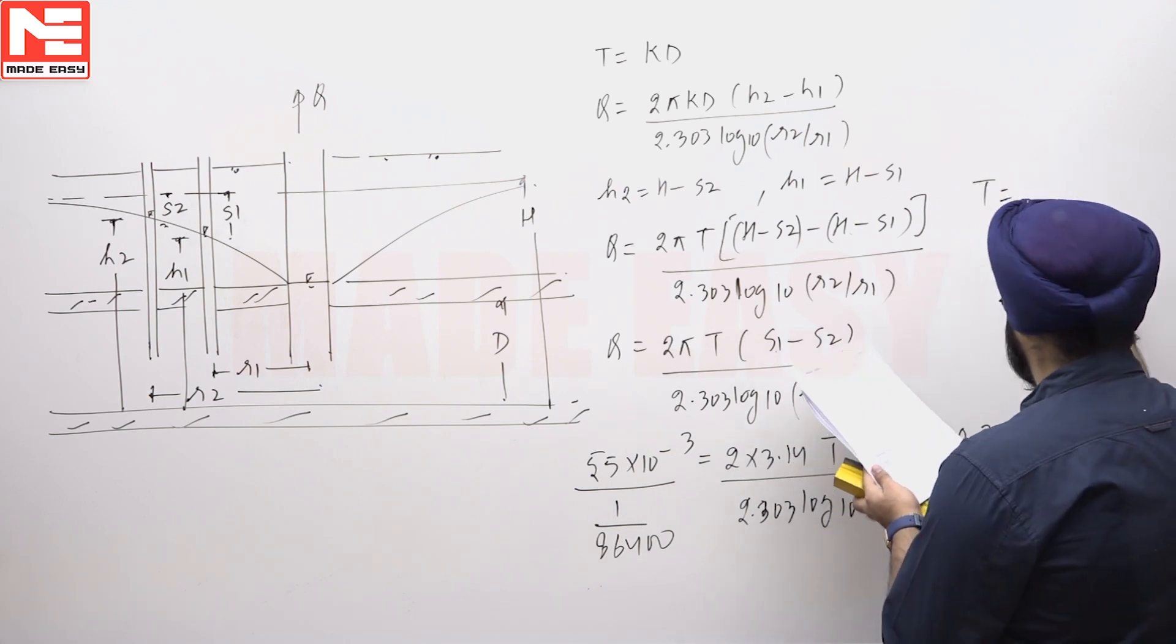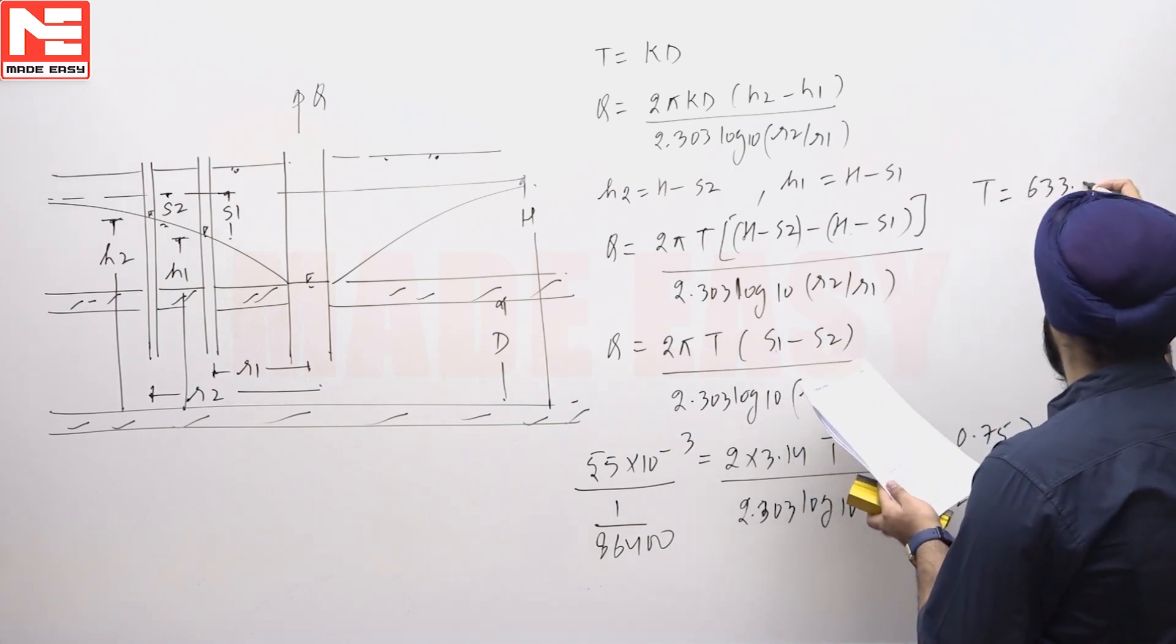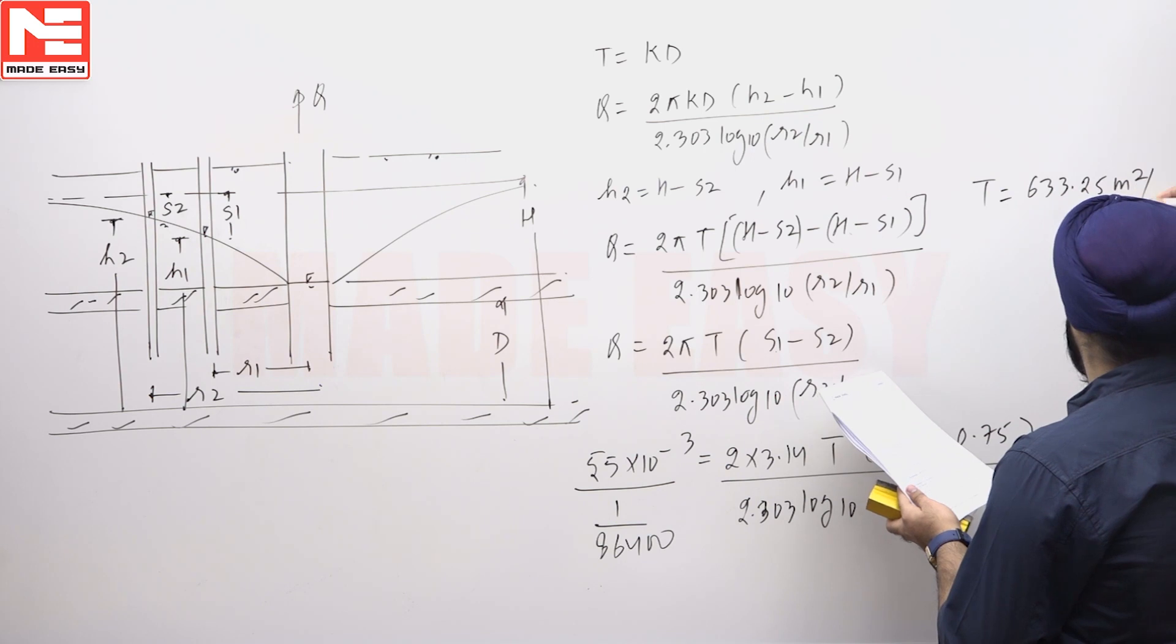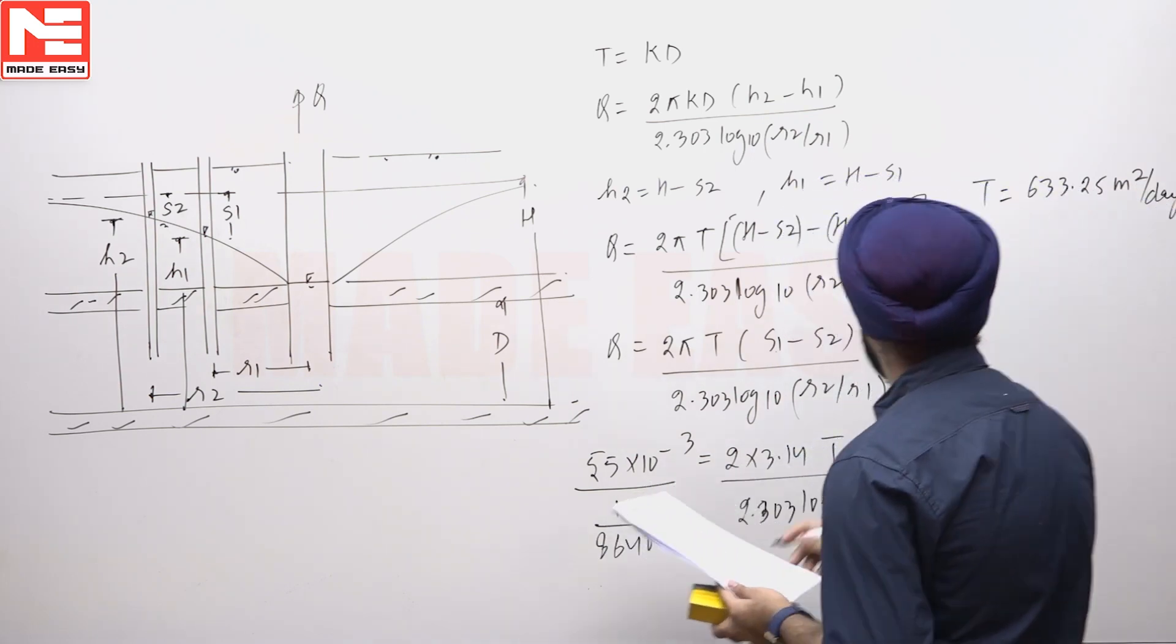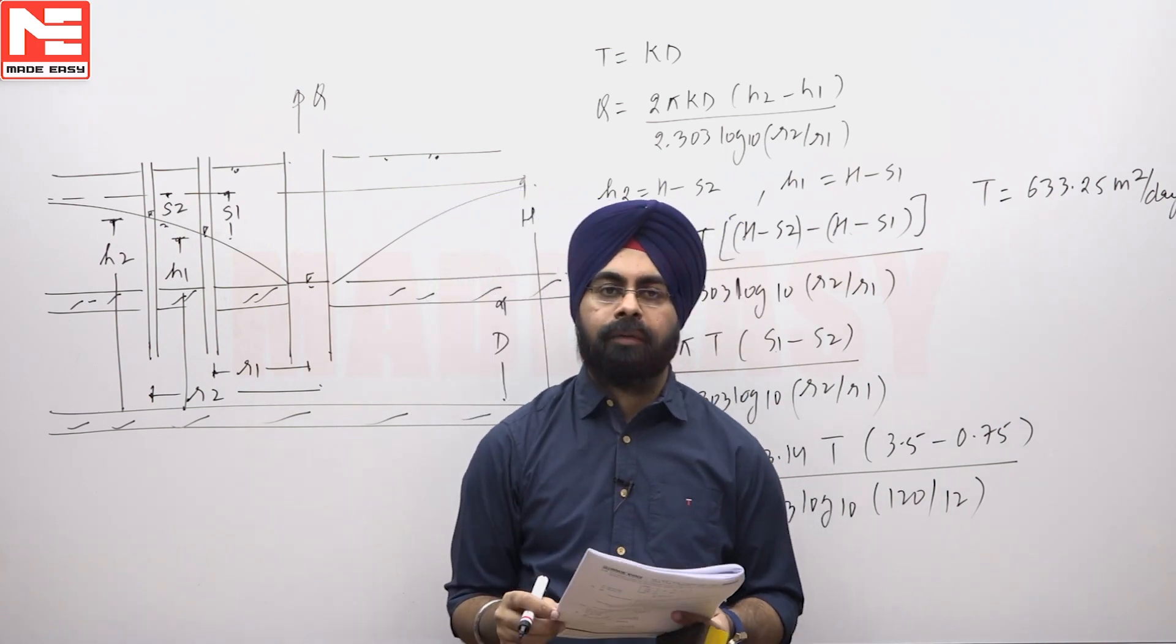On simplification, the transmissibility comes out to be 633.25 meters square per day. So transmissibility is 633.25 meters square per day.